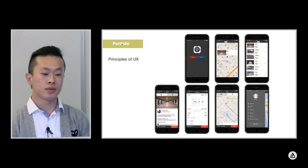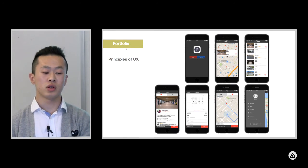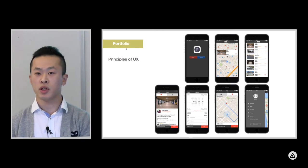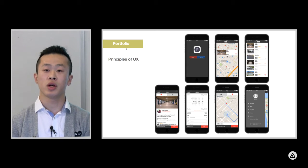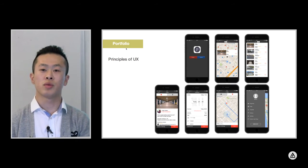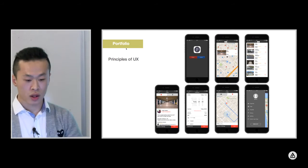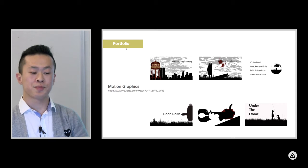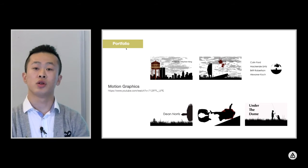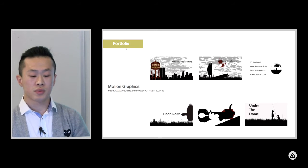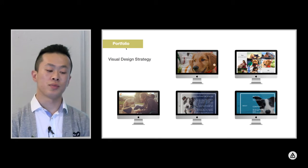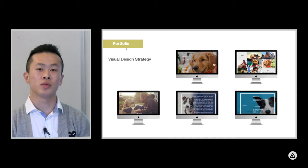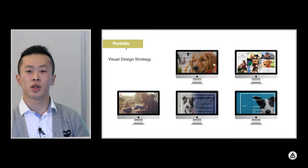This is the previous portfolio from the Principles of User Experience class. This design is basically about an app to help users temporarily rent personal parking spots to solve the problem with San Francisco parking. This is from the Motion Graphics class — a sequence about Under the Dome, an American drama. And this is design work from the Visual Design Strategy class. It's a website called PitVo, which is about calling people to stop purchasing pets and instead support pet adoption.